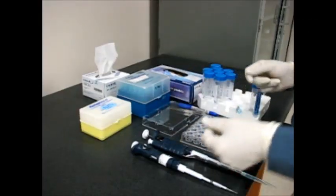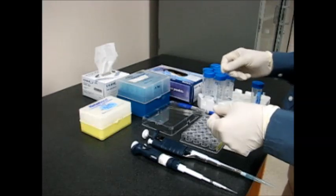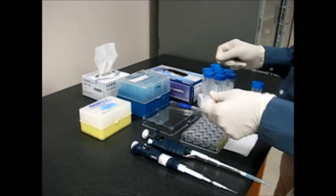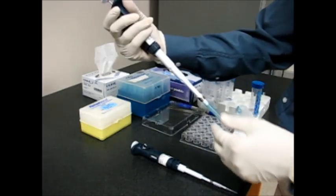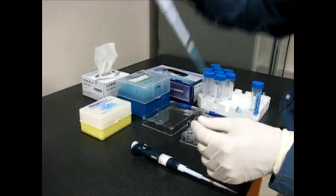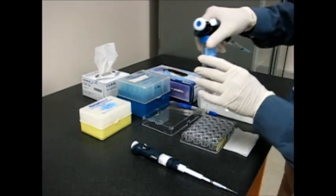This video shows how to actually set up hanging drop vapor diffusion protein crystallization. First I pick the 1000 microliter pipette and take the precipitant solution.